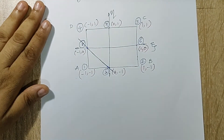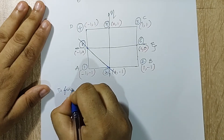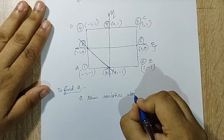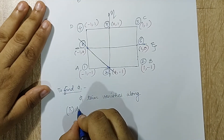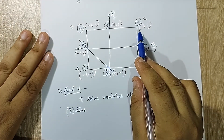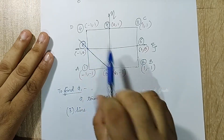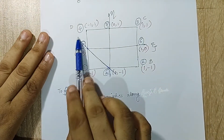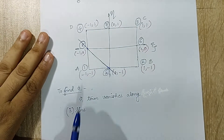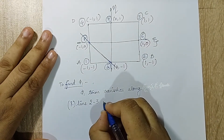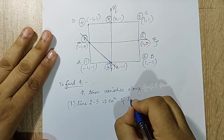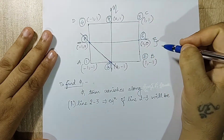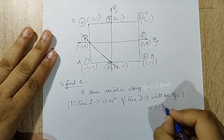Now we will start with derivation of the shape function for node 1 — to find phi_1. This phi_1 term will vanish along certain lines. The first one is line 2-3; node 1 doesn't appear along 2-3 or along 3-4. But node 1 does appear along 1-2 and 1-4, so I cannot consider those. I will be taking lines 2-3, 3-4, and 5-8. For line 2-3, the zeta term remains constant, so the equation is zeta = 1, or 1 minus zeta = 0.